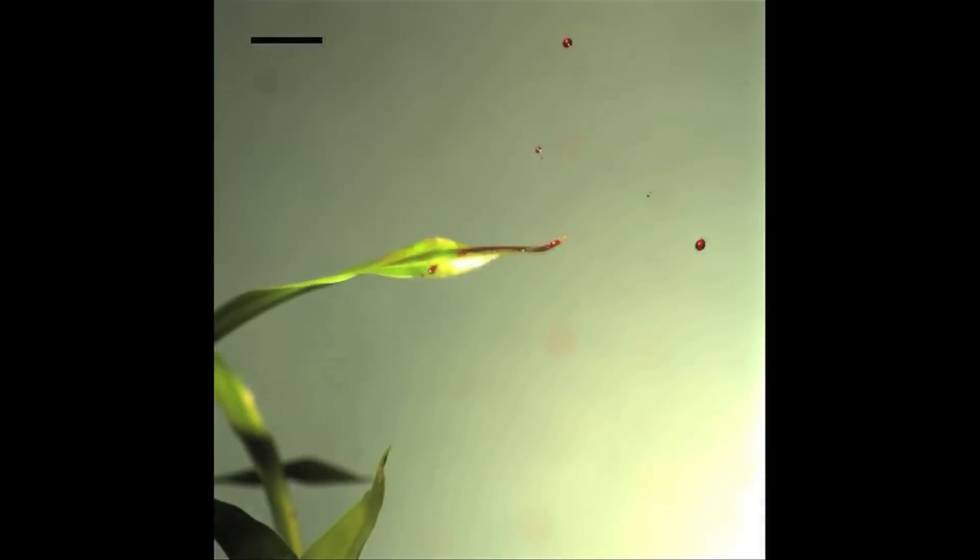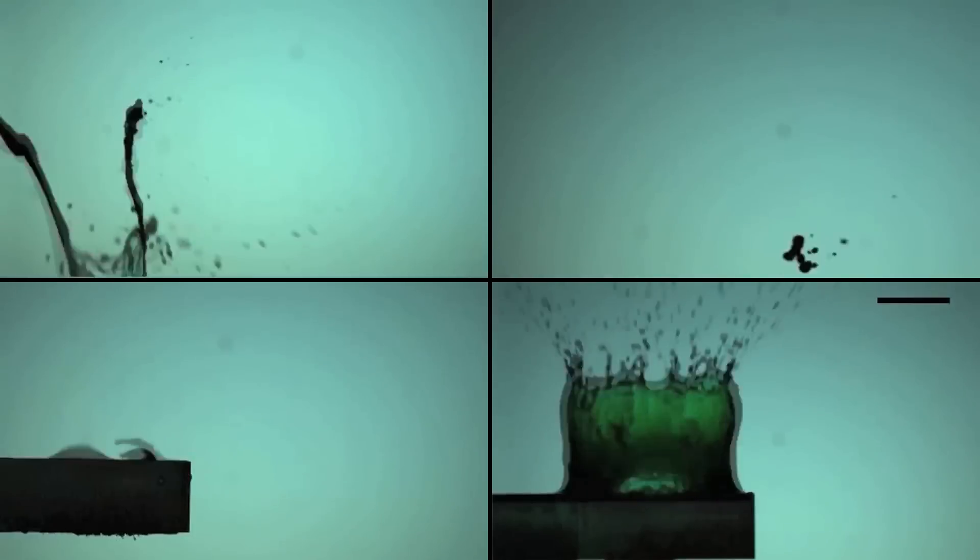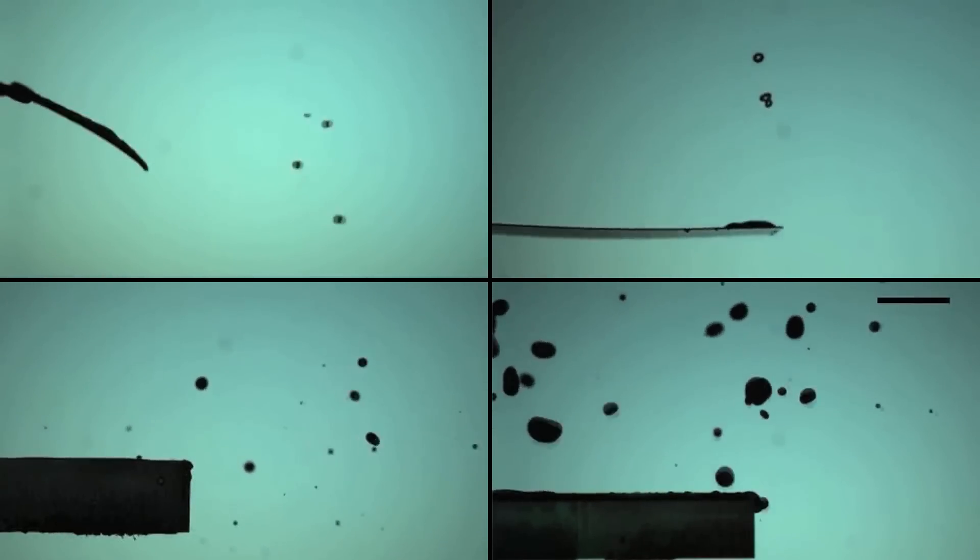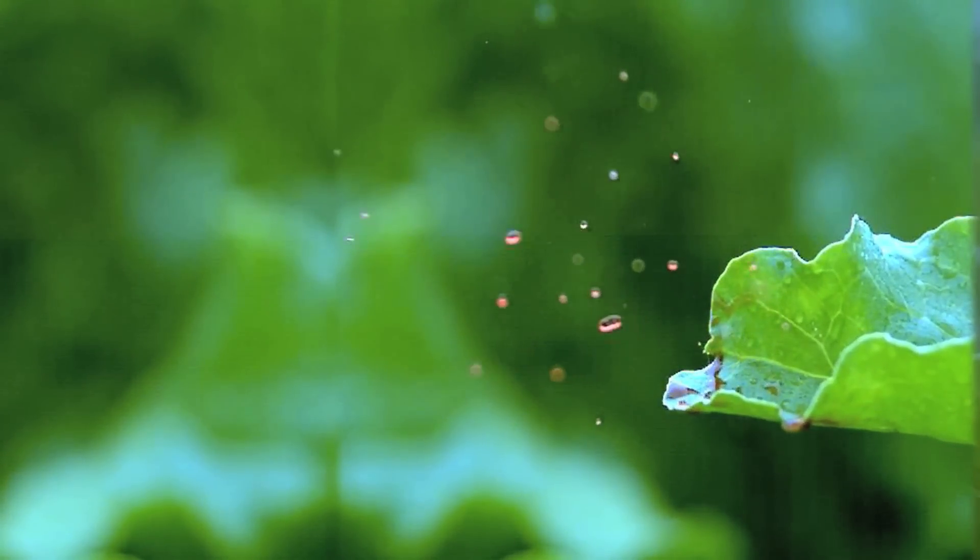Obviously one can think of the surface properties as being important for that dynamics, but also the compliance and the mass of the leaf. The inertia of the leaf actually changes completely the outcome in terms of the droplet sizes that you will be emitting, their distribution in size, but also their range, how far they can go. And that determines then how the next plant can be infected.